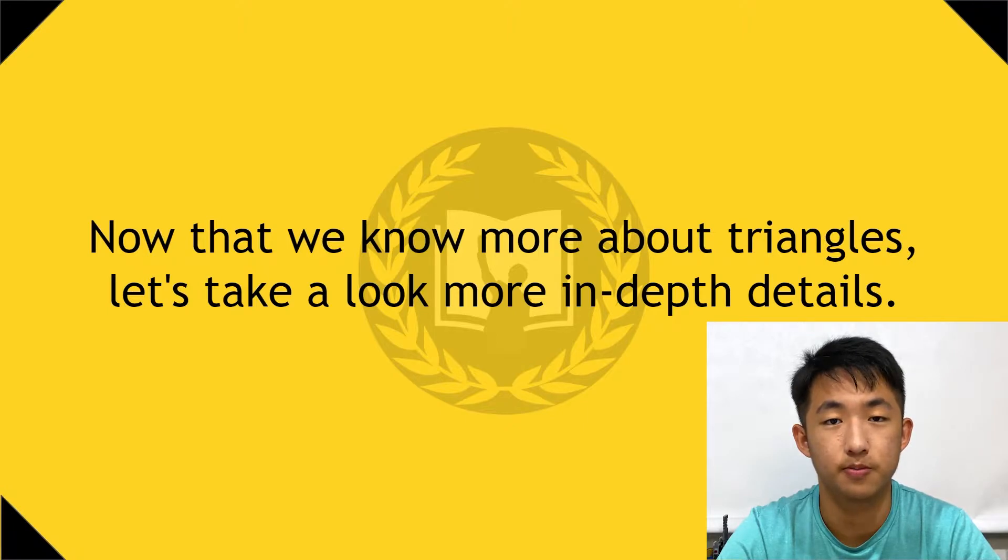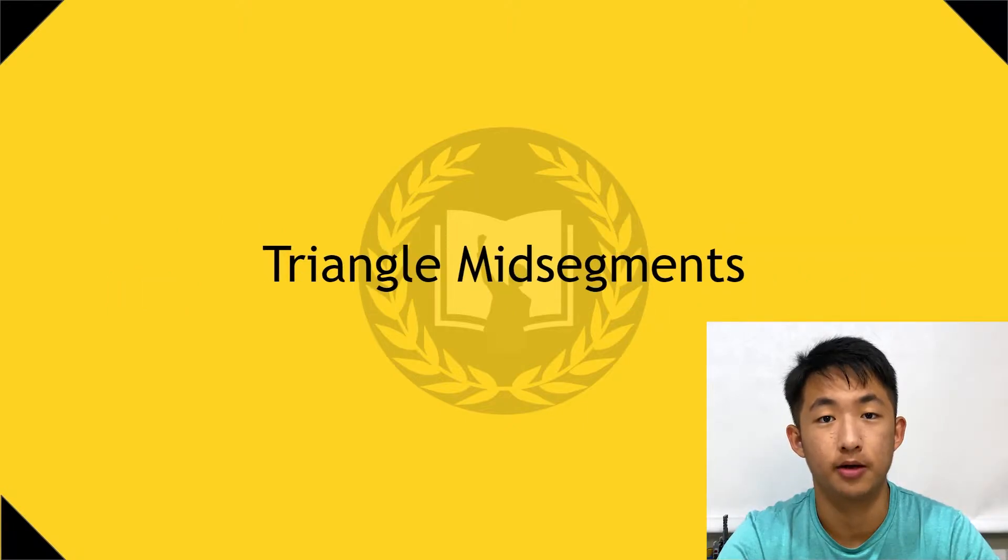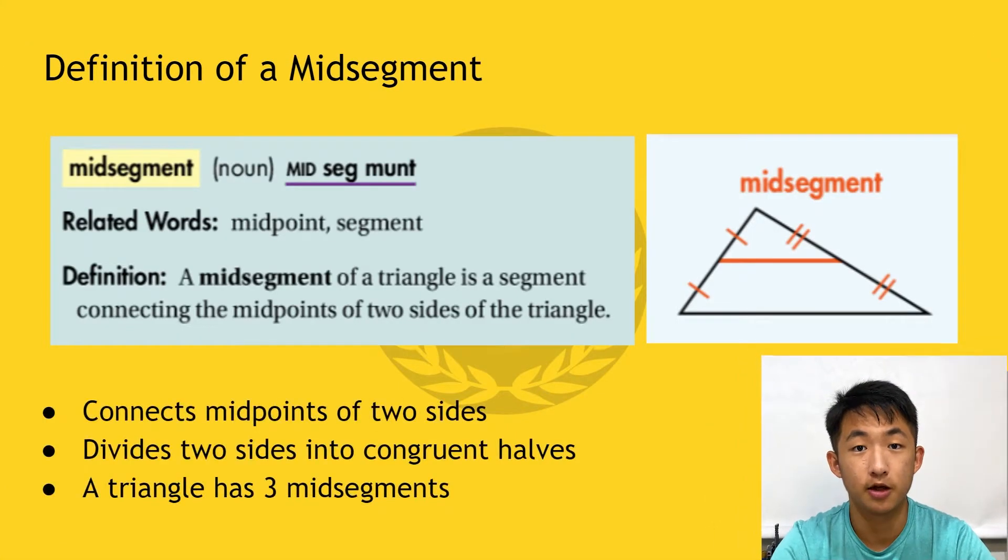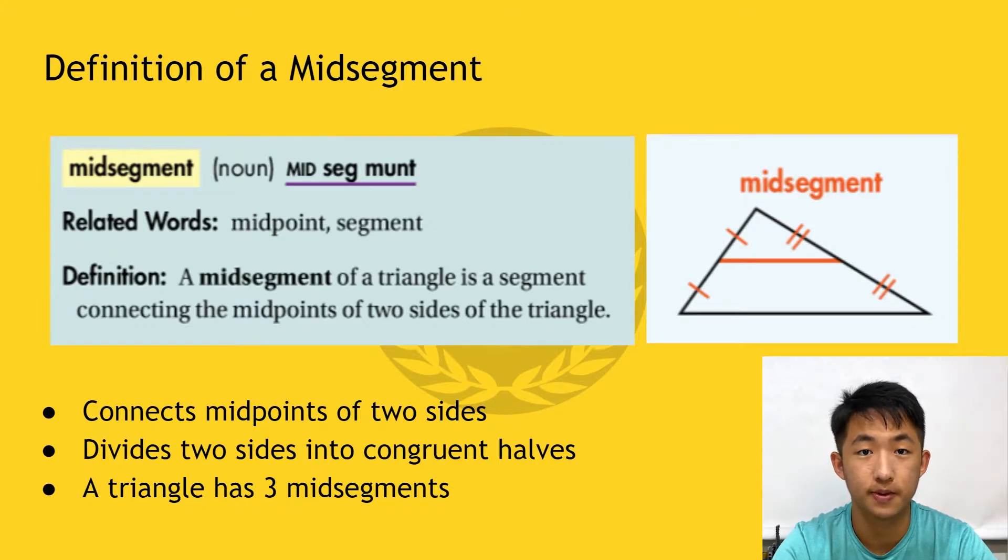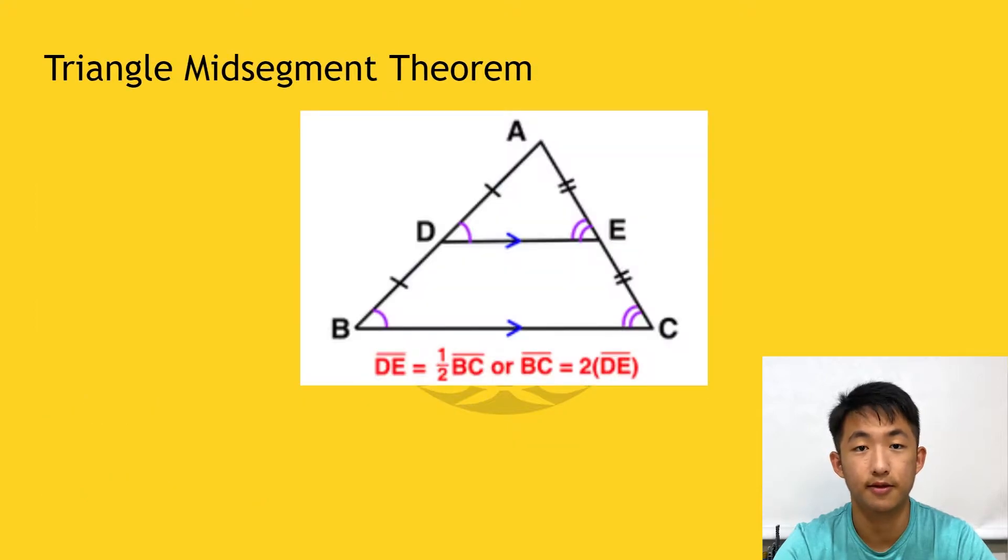Let's begin by talking about triangle midsegments. A midsegment of a triangle is a segment that connects two midpoints of two sides of a triangle. This divides the two sides into congruent halves because they are connected by the midpoint. Furthermore, there are three midsegments per triangle.